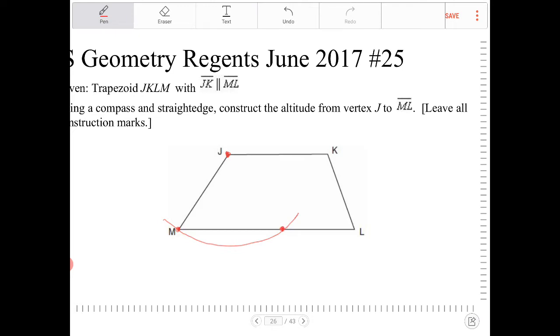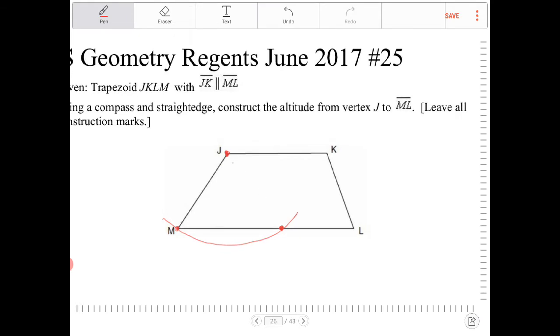So what you're doing now is this point over here, that intersection there, the distance from that intersection to point J is going to be equal in distance to the distance from M to J.